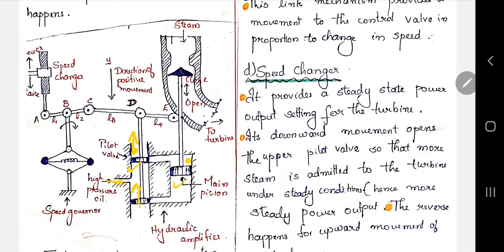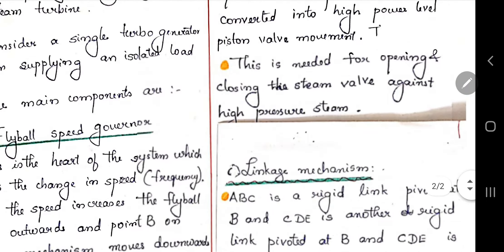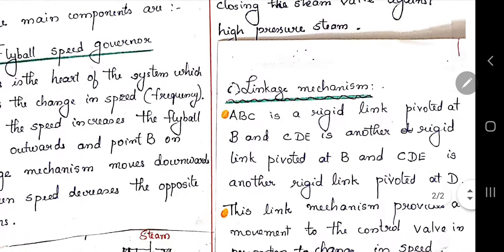The high-pressure oil goes through this part and makes the main piston move downward, opening the steam valve. If the pilot valve moves downward, the high-pressure oil enters from the other side and makes the main piston move upwards, thereby closing the steam valve. This is how the pilot valve and main piston valve work in the hydraulic amplifier — it is mainly used for opening and closing the steam valve against the high-pressure steam.